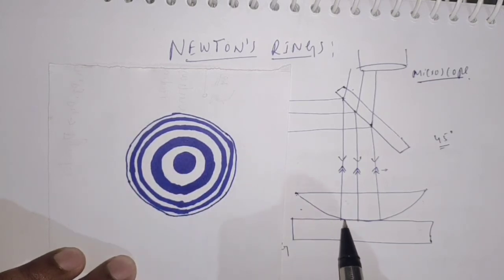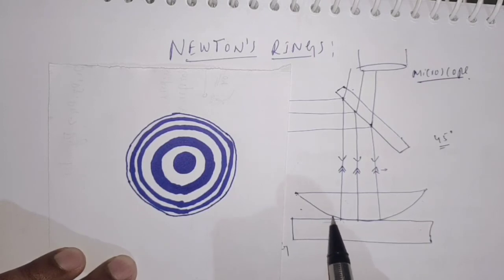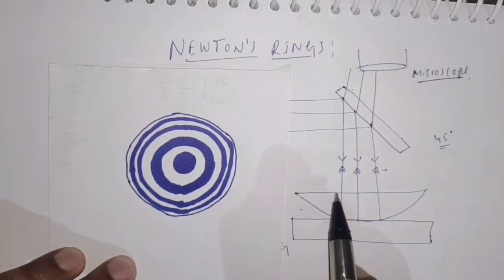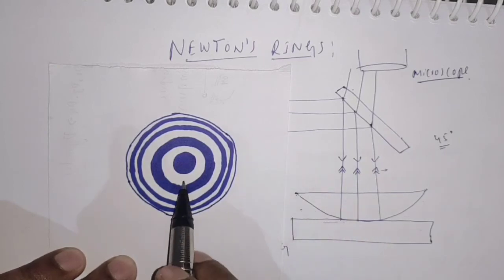And when we move from zero thickness, gradually the thickness increases. Because of this, the waves interfere constructively, so we are going to observe bright fringes as the thickness increases.